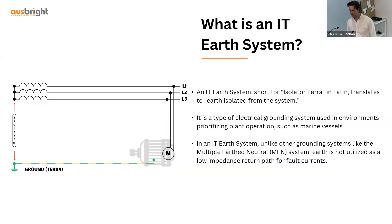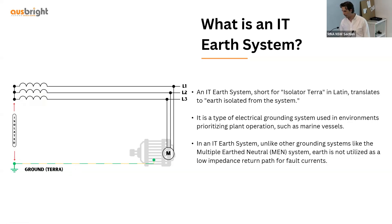What is an IT Earth system? IT stands for isolated terra, which means the system is isolated from ground — there is no connection between the source and ground. It's mainly used in systems or areas that need to prioritise operational plant, which includes marine vessels. Unlike a MEN system, there is no Earth-neutral, so there is no Earth utilized for a low impedance return path for fault currents.